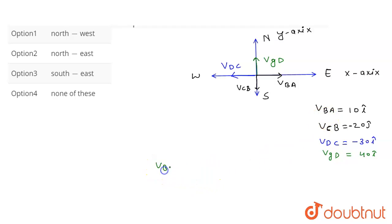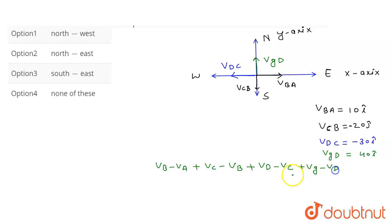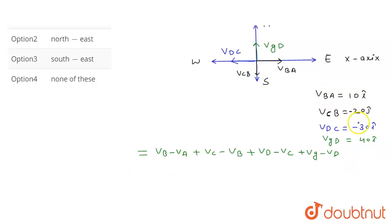Adding all these relative velocity expressions: (V_B − V_A) + (V_C − V_B) + (V_D − V_C) + (V_G − V_D) equals 10î − 30î + (−20ĵ) + 40ĵ, which simplifies to −20î + 20ĵ.